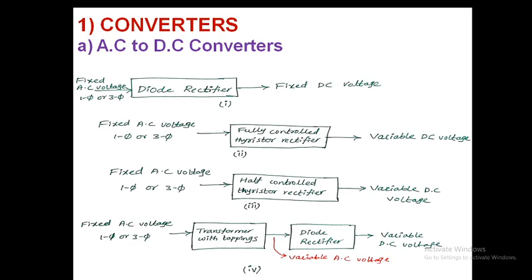The third one is a half controlled thyristor rectifier. Here also controlled switches — thyristors — are present. By this we can also get variable DC voltage. The first one, the diode bridge rectifier, gave only fixed DC voltage, but by using the diode bridge rectifier with additional means we can also get variable DC voltage.